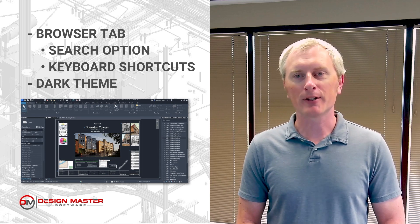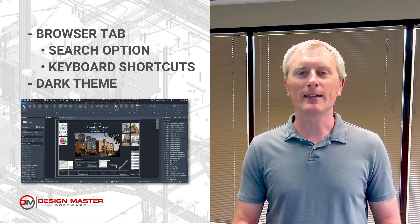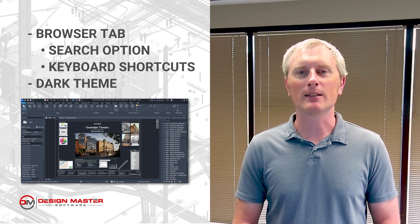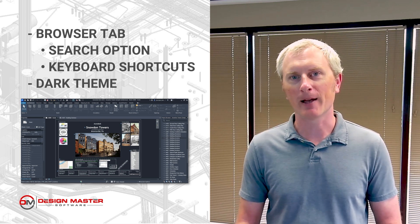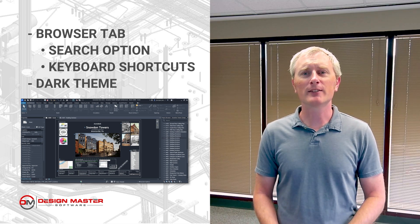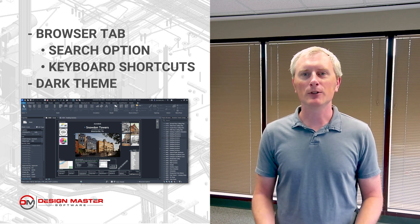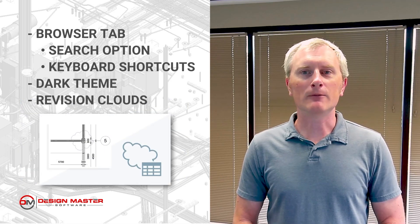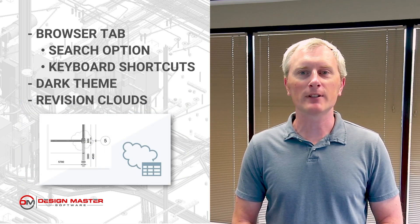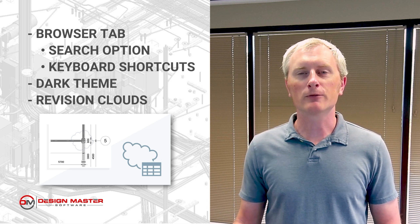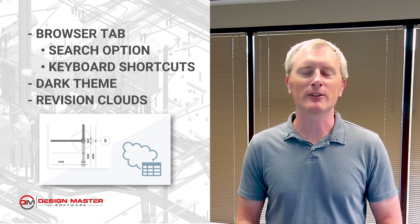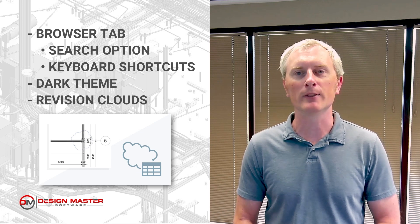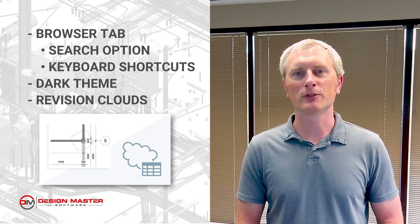They also added a dark theme. They took the light gray background in Revit and added an option to make it a dark gray background. It's just a visual change, but it gives people who like dark themes the option to have that — you can toggle it in the options. Finally, the revision clouds got some scheduling functionality. If you use revision clouds and want to be able to schedule those, that's been added, and it's a nice improvement to that feature.